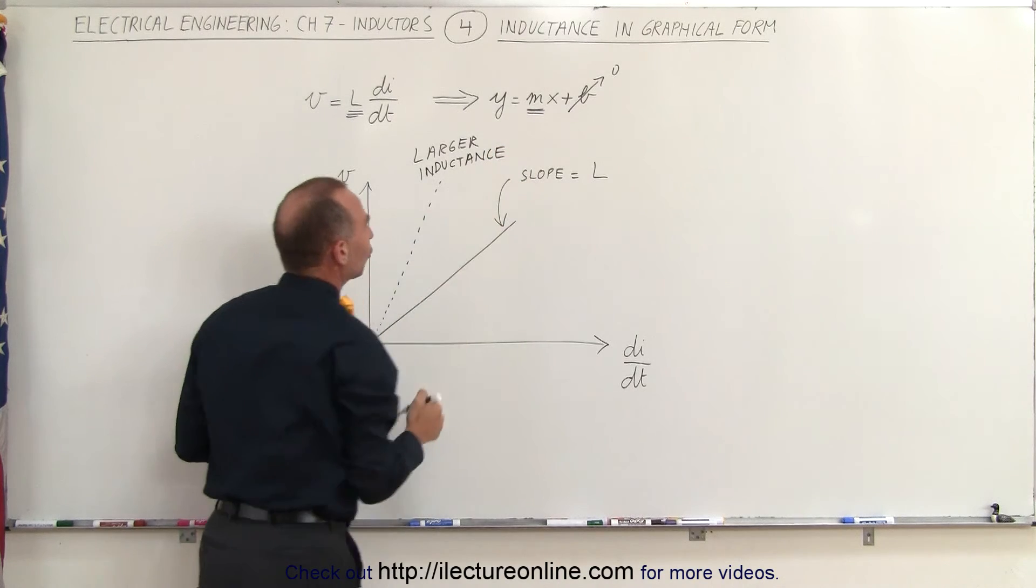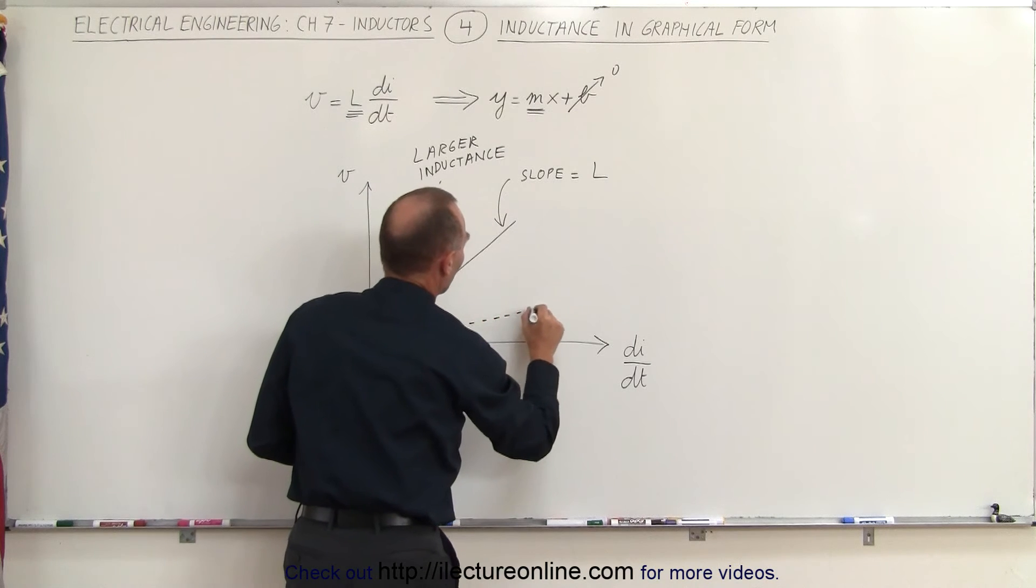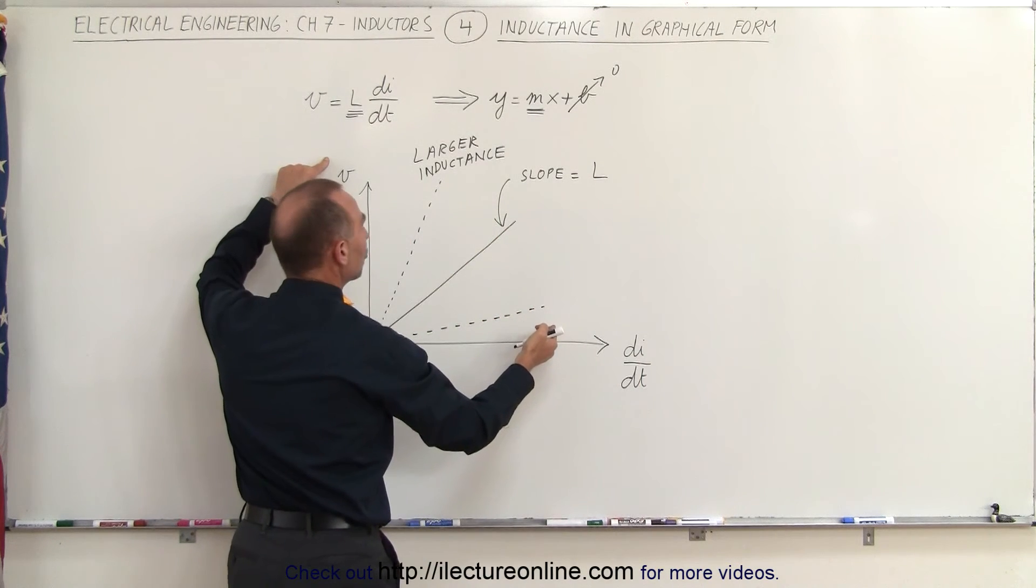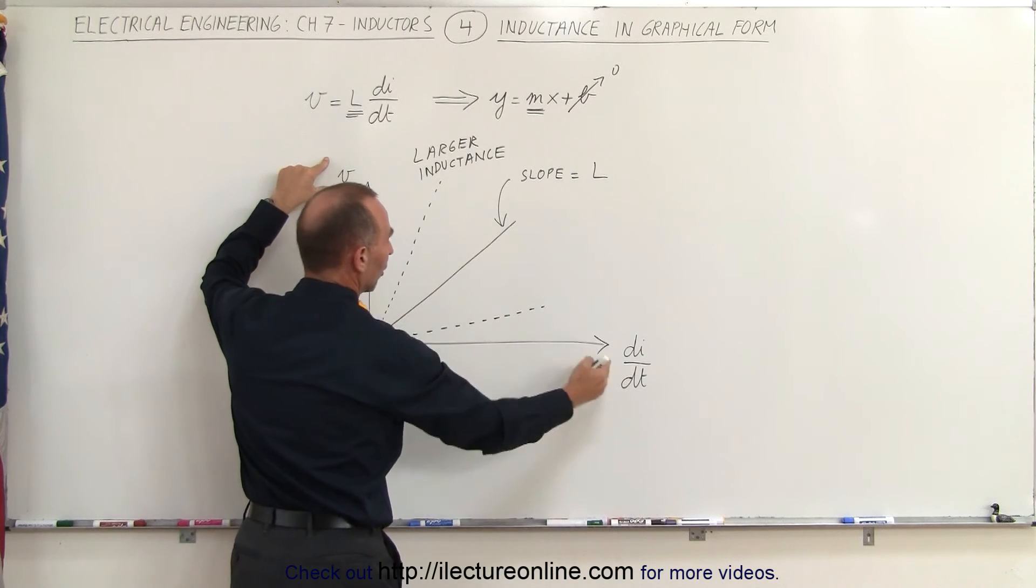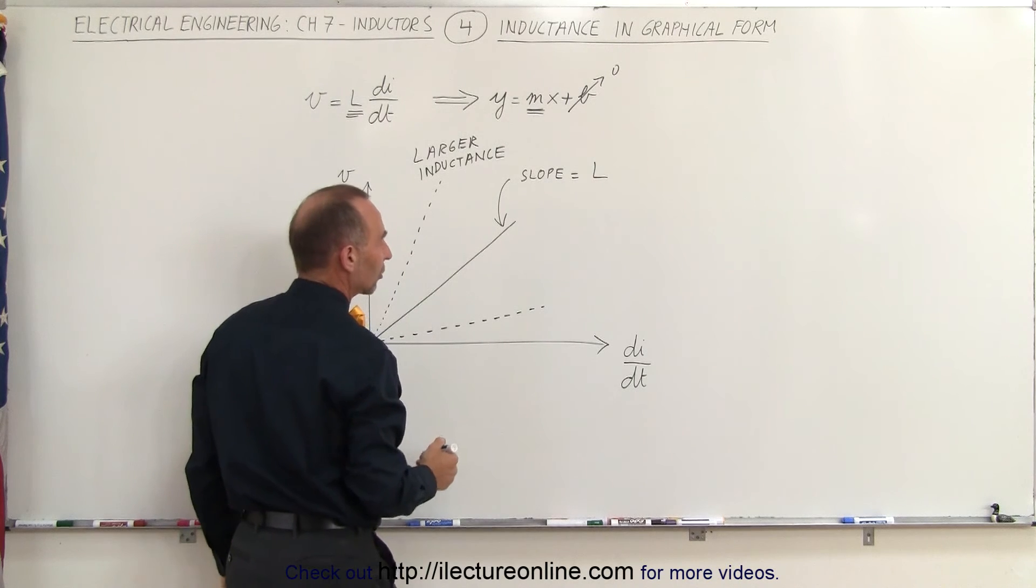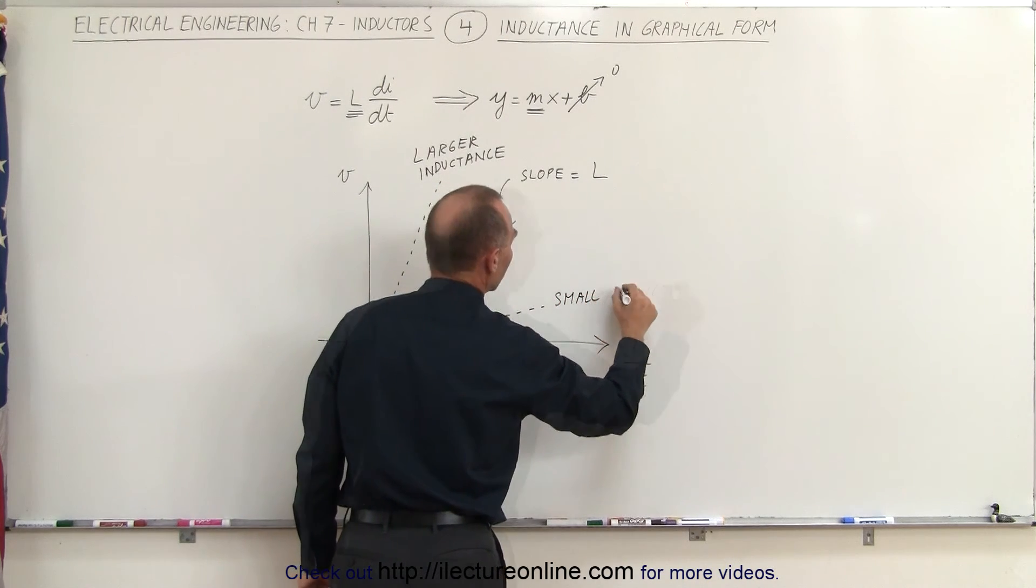And if you have a smaller inductor with smaller inductance, then the slope would look something like this. In other words, with the rate of change of the current, it would cause a small change in the voltage, whereas in this case, a rate of change of the current would create a large voltage across the inductor. So this would be a small inductance, and that would represent a larger inductance.